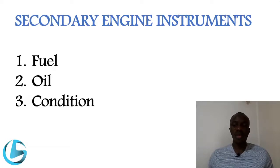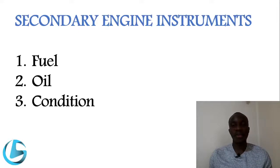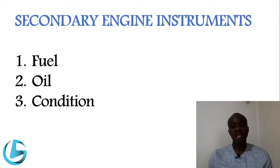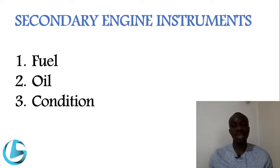Next we look at the secondary engine instruments. The first group is the fuel instruments. The main fuel instrument is the fuel flow, which indicates the fuel being consumed by an engine in kilograms, pounds, or gallons per hour. Still on fuel, we also have a fuel temperature indicator, which indicates the fuel temperature. The sensor for this is fitted at the exit of the fuel heater of an engine, so it indicates the temperature of the fuel going through the engine.